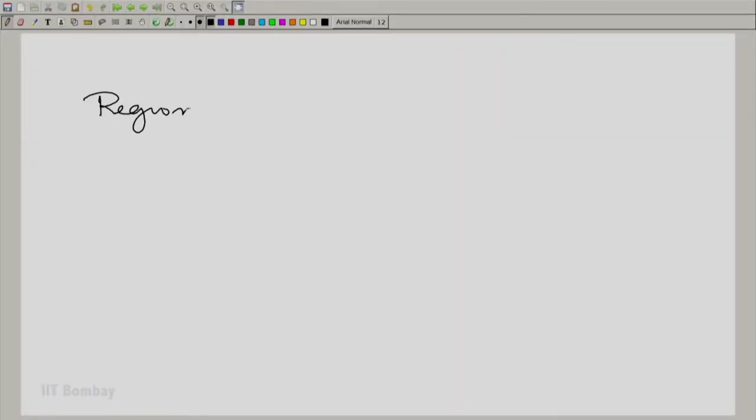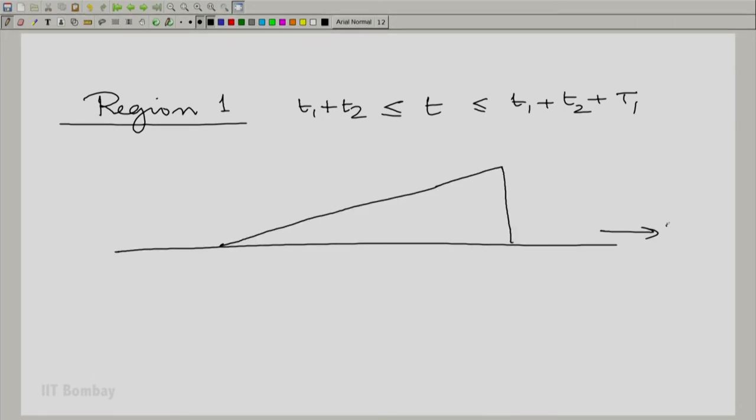Region 1, you know the regions do not change. T is greater than or equal to T1 plus T2, but less than or equal to T1 plus T2 plus capital T1. And in that region, you essentially have the train not quite having entered the platform. So I will draw the platform and the train in different colors here. I will superpose the train.